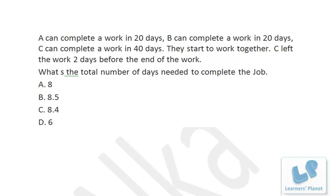To recap: in the last 2 days, 20% of the work was finished, and in the previous days 80% was finished. If all three work together they take 8 days for the full work, but since they only do 80% together, that's 6.4 days. Adding the 2 days gives 8.4 days total to complete the work.